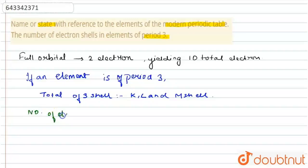The number of electron shells in period 3, or I can say in elements of period 3, is three.